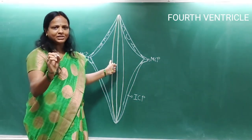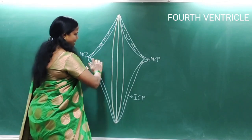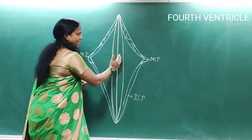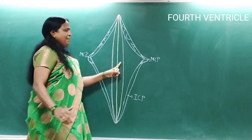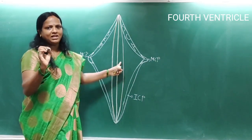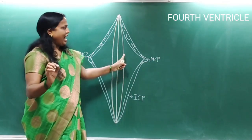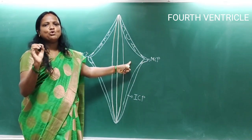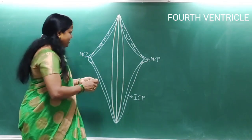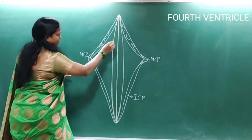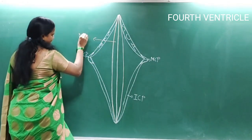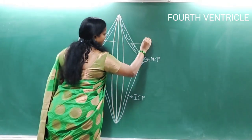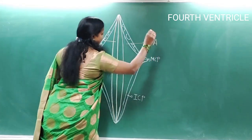The sulcus limitans divides the rest of the floor into a medial area called the medial eminence and the lateral area called the vestibular area.